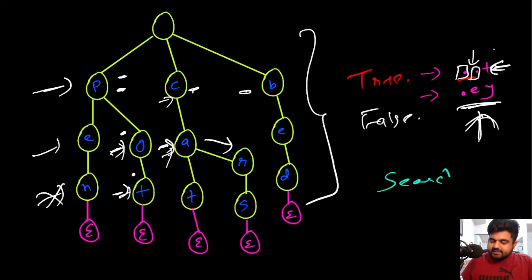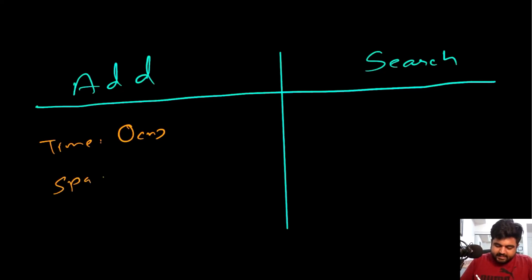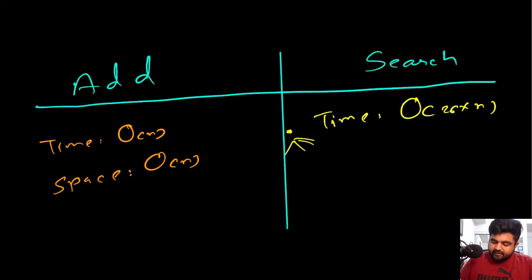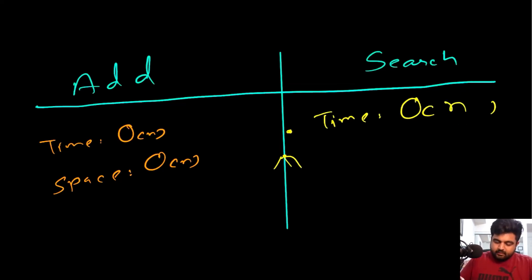The only tricky part is handling the dot values — apart from that it's straightforward. For the add function, time complexity is O(n) where n is the number of characters in the input, and space complexity is also O(n). For the search mechanism, time complexity is O(26 × n) because for any given dot there can be up to 26 children at any node to iterate over. Since 26 is a constant we can consider this O(n) as well. Space complexity is O(26^n).